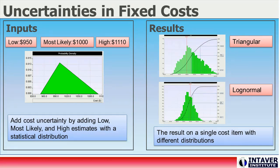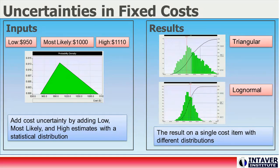Here we show how we can apply uncertainty to a fixed cost. The base, or most likely, cost is $1,000. The low, or optimistic, value is $950, and the high, or pessimistic, value is $1,100. A visual representation of these estimates with a triangular statistical distribution is shown on the left. On the right, we can see the results of an analysis using two different types of statistical distributions. Different distributions can affect statistical measures like standard deviation. The triangular distribution has fatter tails, meaning results have a higher probability of landing farther from the most likely value than in the log-normal distribution.